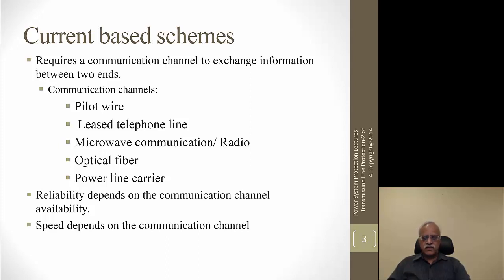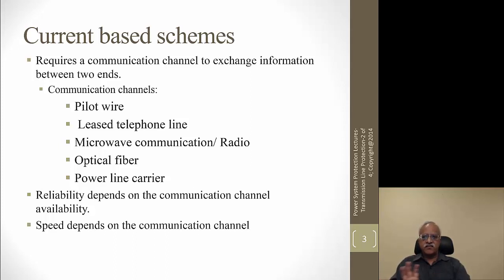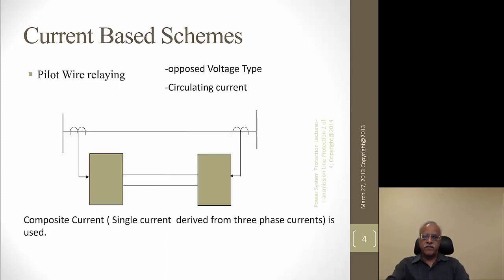The speed also depends on the communication channel. Fiber optics is very fast. Similarly, powerline carrier is very fast — within 3 to 5 milliseconds. Whereas a leased telephone line could take a cycle, around 16 milliseconds, to exchange information from point A to point B. The main focus of these lectures will be on distance relaying, which is the key topic. The rest are simpler concepts. Distance relays are a little more complex than the other schemes.